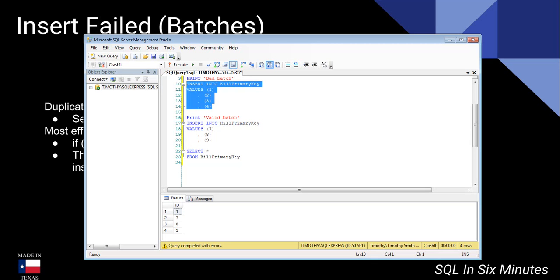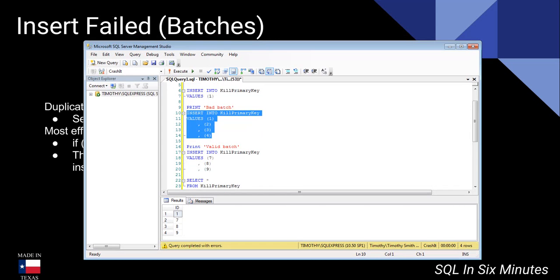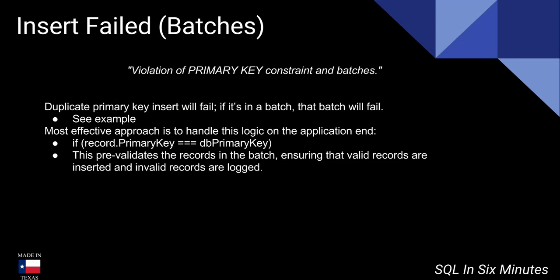In speaking with the application developer, one of the things I pointed out is that if our application does not handle the logic of checking if the primary key exists on some level, then what that means is that if I insert 10,000 records at a time and one of those records is a duplicate primary key, because T-SQL is a set-based language, that batch is going to fail. One of the ways to handle this depends on how you write it — you can do a one-by-one insert.